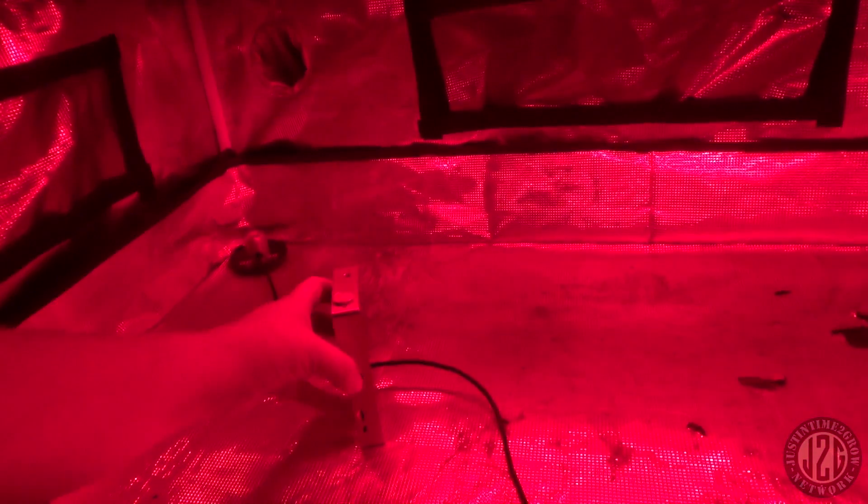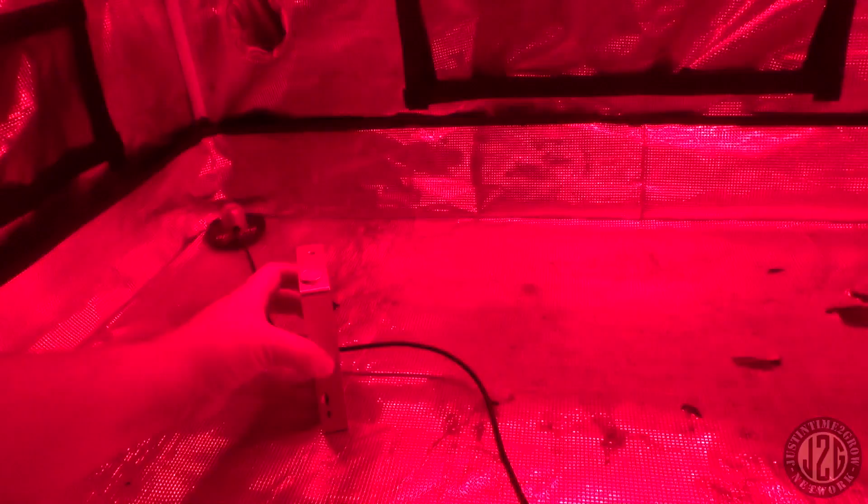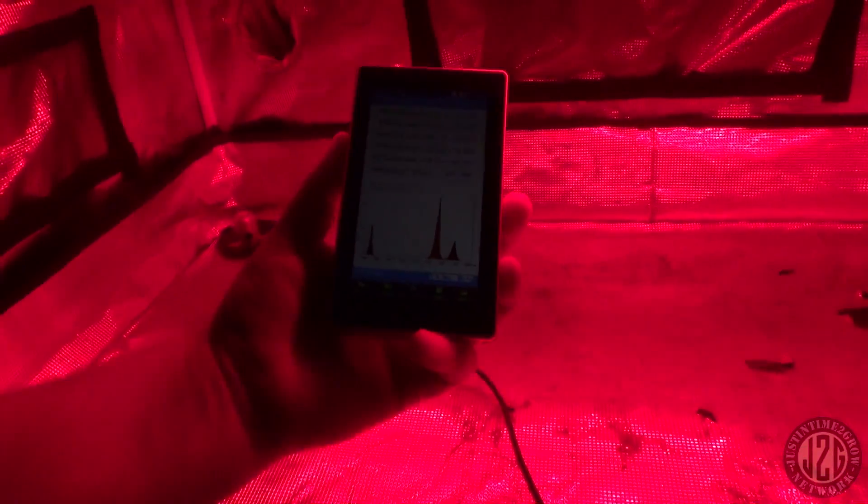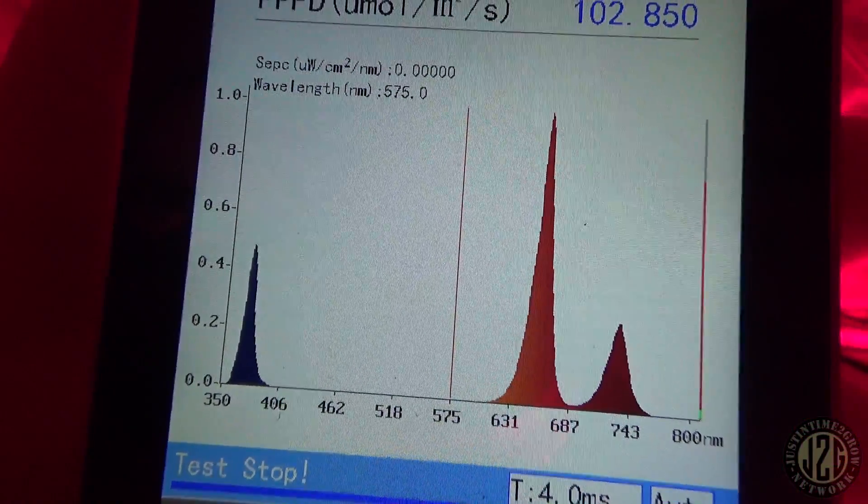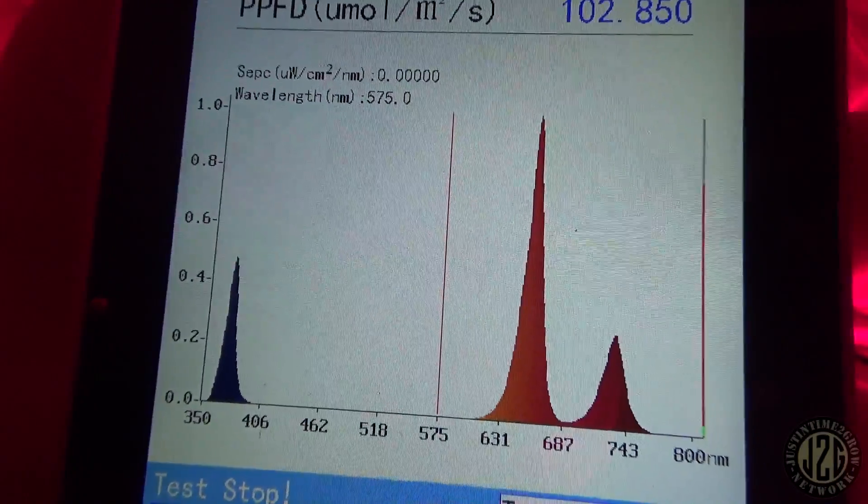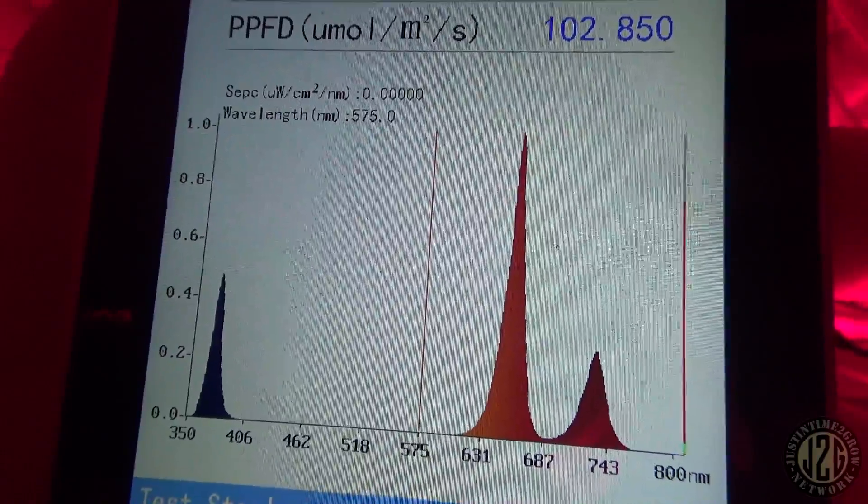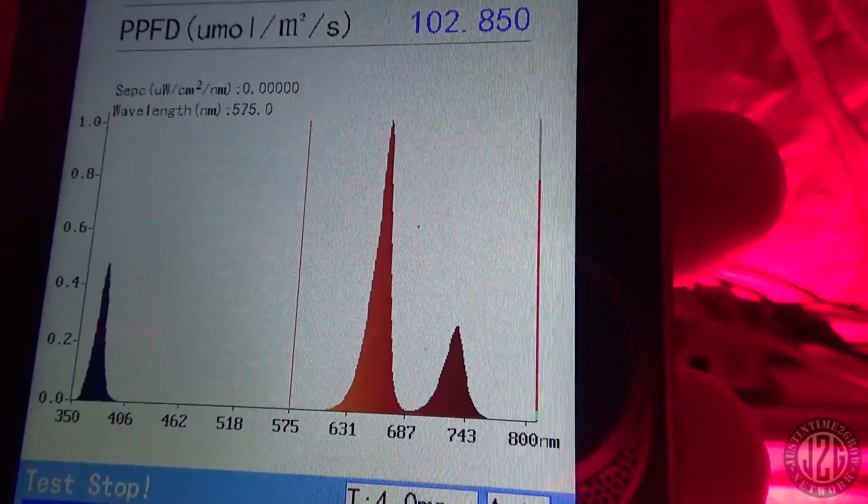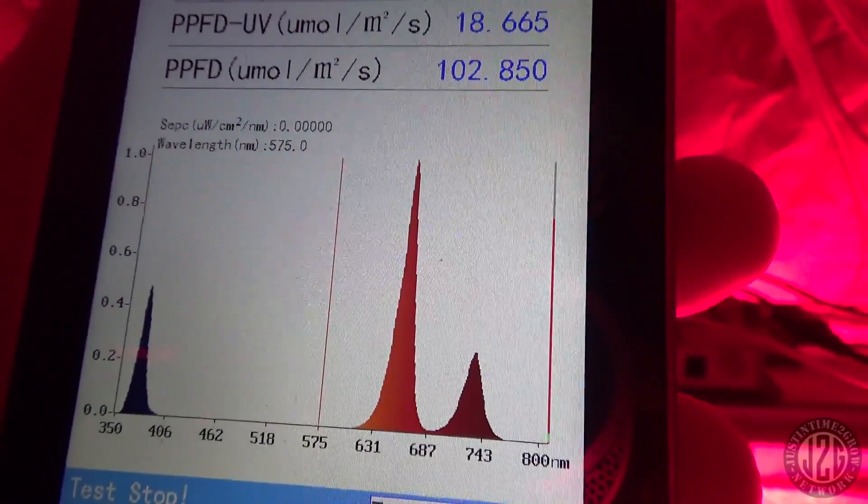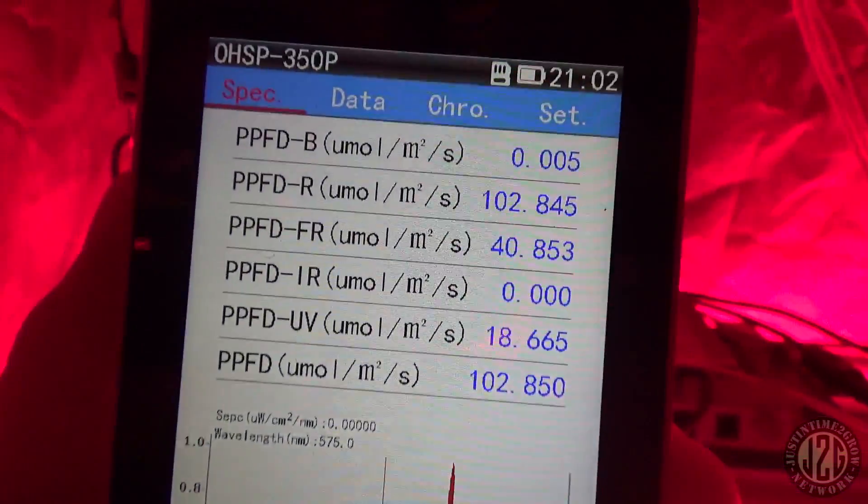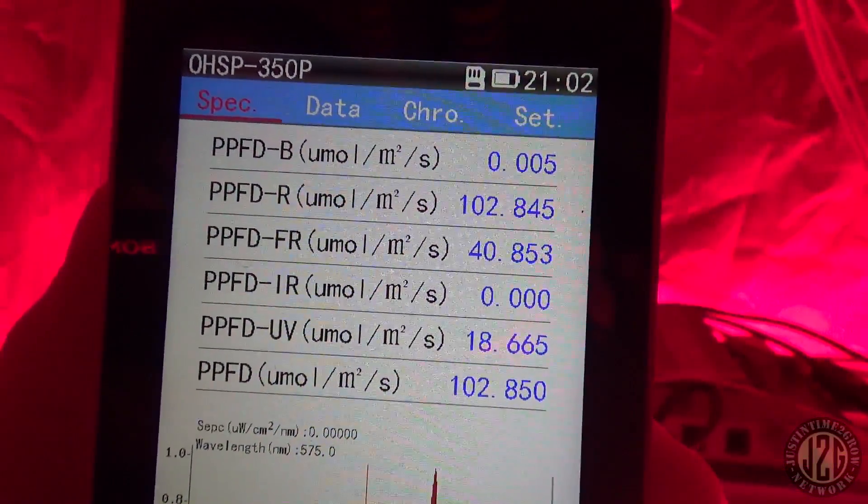Now we get the spectrum meter out. Get this fired up, let's see if it'll take a good reading here. Sometimes it doesn't like just UV and IR setups. Yes, it didn't even take a reading there. Come on, you can do it. Oh there we go. All right so you can see what it's got going on here. You've got your UV all the way down there, about 360 it looks like. And then you've got your 660 red spike and then your 740 IR or deep red.